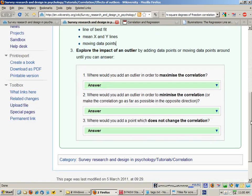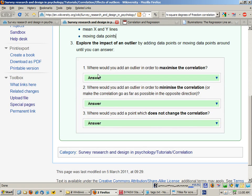Now using these two applets you should be able to try and answer these three questions: Where would you add an outlier in order to maximize the correlation? Where would you add an outlier in order to minimize the correlation, or possibly even make the correlation go as far as possible in the opposite direction? And where would you add a point that does not change the correlation at all?